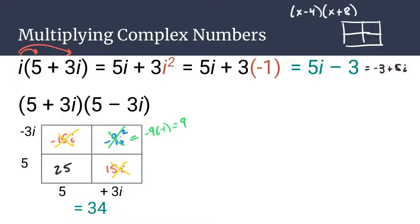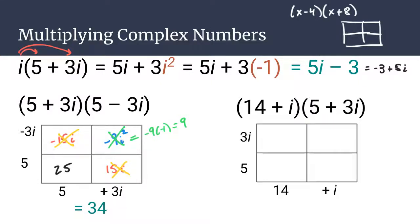Now, that's an interesting example. Let's take a look at one that doesn't boil down quite as nicely. So if you have 14 plus i times 5 plus 3i, you would still make your generic rectangle. So here's our generic rectangle, 14 plus i across the bottom, 5 plus 3i across the top. So as we do our multiplication in each spot,